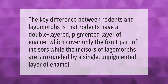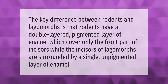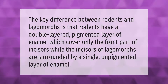The key difference between rodents and lagomorphs is that rodents have a double-layered pigmented layer of enamel which covers only the front part of incisors, while the incisors of lagomorphs are surrounded by a single unpigmented layer of enamel.